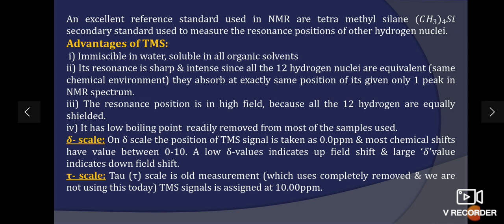The newer method of representing NMR spectrum is del scale. On del scale, the position of TMS signal is taken as 0 ppm and most chemical shifts have value between 0 and 10 for proton NMR.